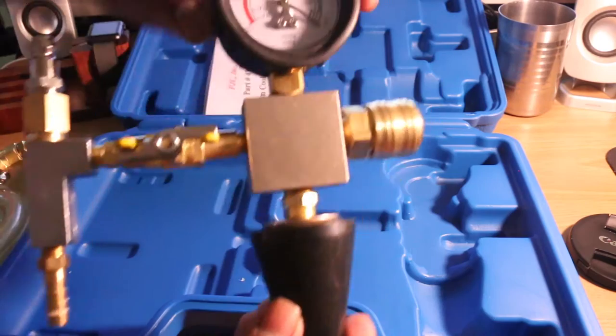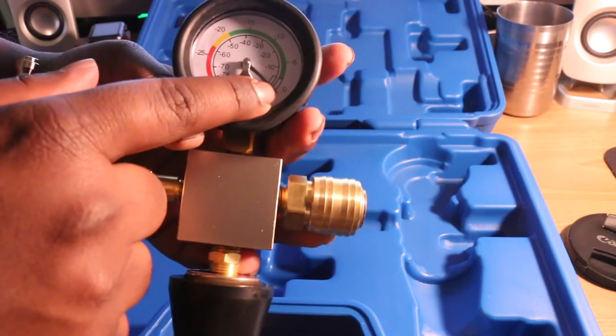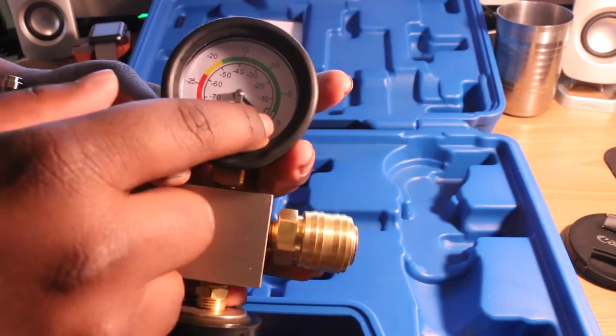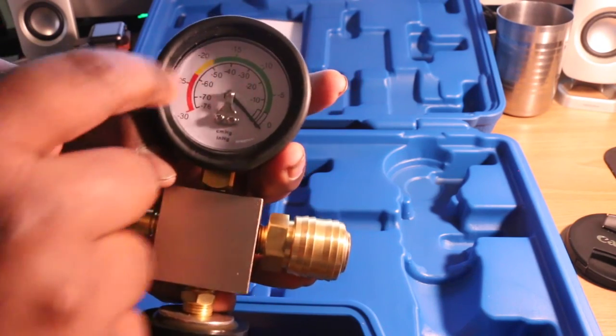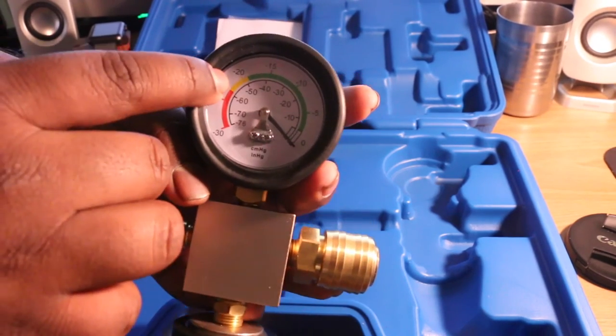Last but not least, we have the main component. Here we have a gauge. Most gauges you see read from red to green, red being 5, 10, 15, but this one's actually reversed and the manual recommends at 20.